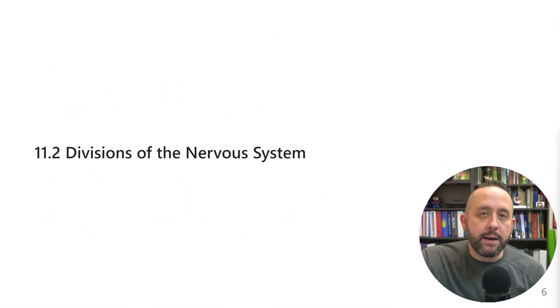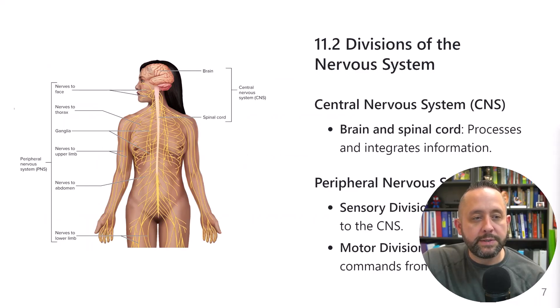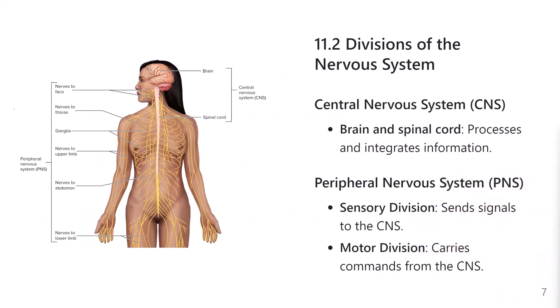In terms of anatomy of the nervous system, the central nervous system and the peripheral nervous system are the two major anatomical divisions. The central nervous system contains the brain and the spinal cord only. The peripheral nervous system contains everything else — anything that's not part of the brain or spinal cord. That includes cranial nerves and any nerves that come off the spinal cord and provide innervation to other parts of the body.